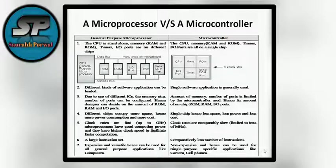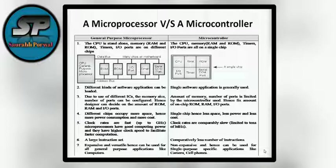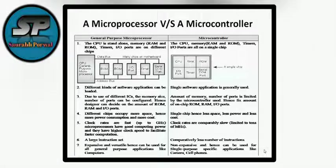Microprocessors are generally meant for general-purpose operations, so clock rates are faster in microprocessors, while clock rates are comparably slower in microcontrollers. A large instruction set is available for microprocessors, while comparatively fewer instructions are available in microcontrollers. Microprocessors are used for general-purpose applications like personal computers and laptops, while microcontrollers are used for single-purpose specific applications like cell phones, cameras, and digital camcorders.